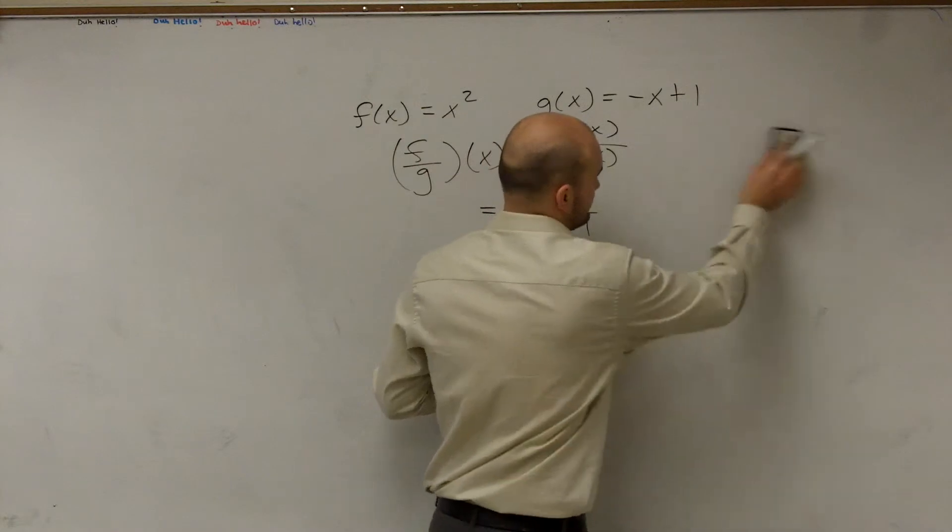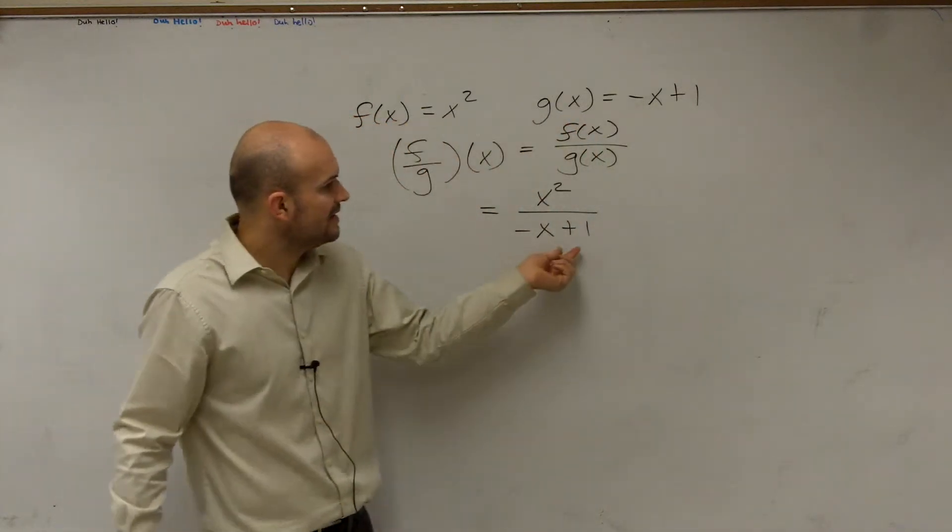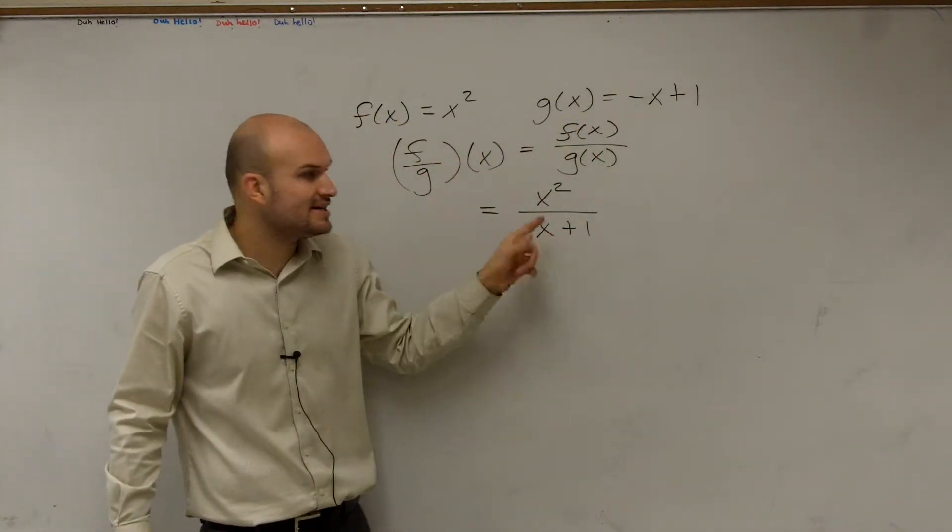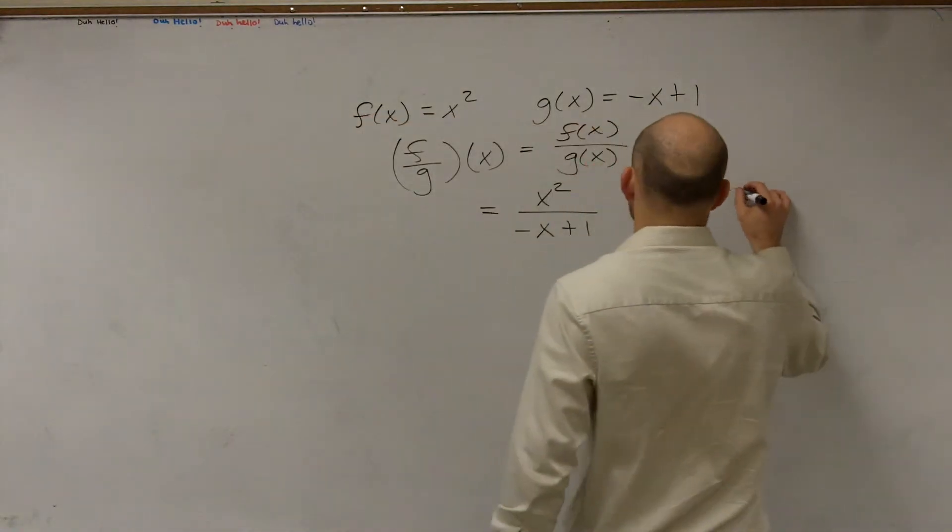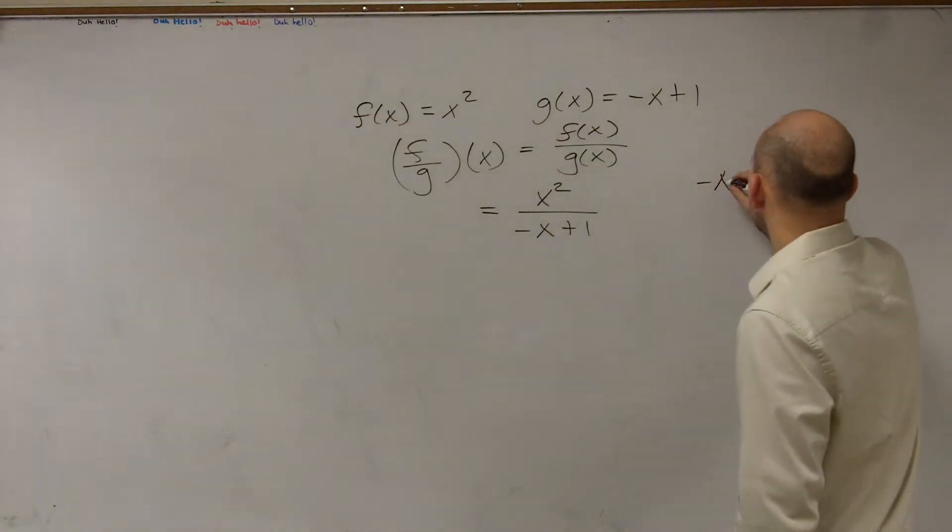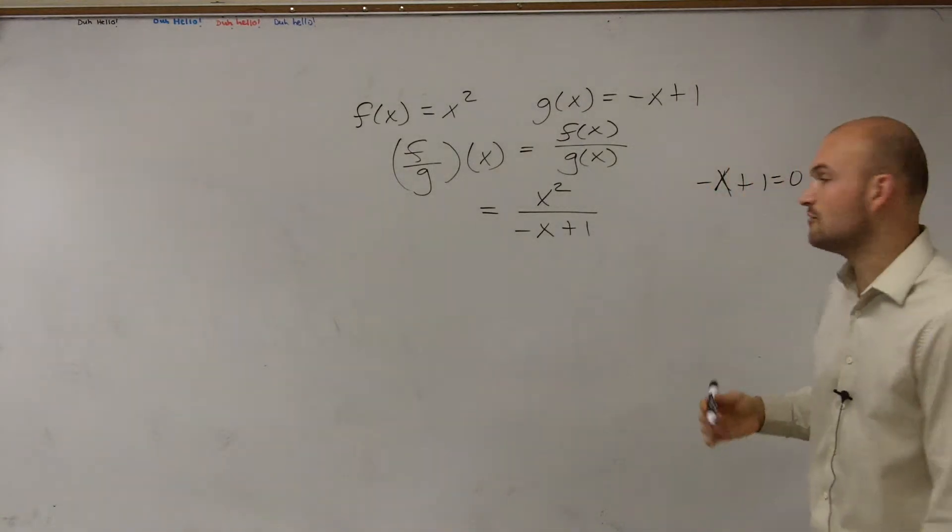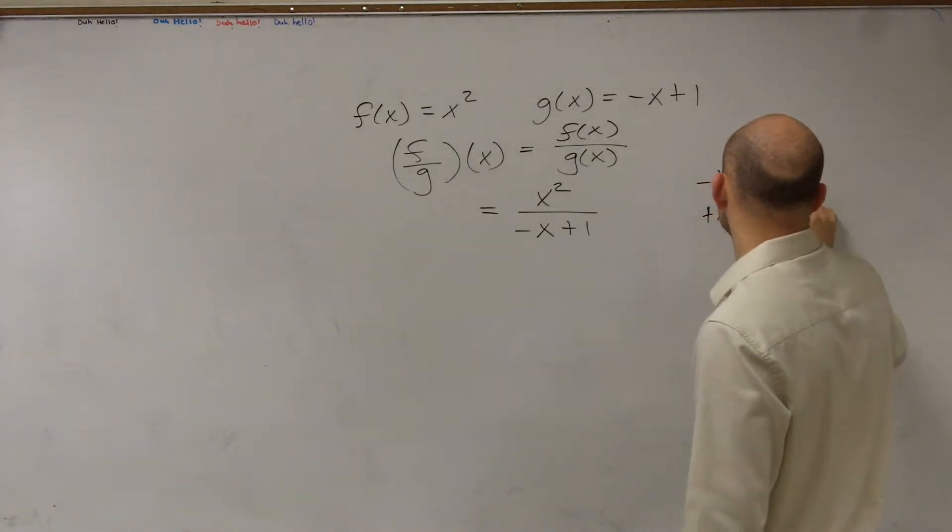So ladies and gentlemen, what we have here is I want to figure out what, then, is going to make this denominator zero. So I write negative x plus 1 equals zero. Then what I do is I solve for x. So I add x to the other side. And therefore, I say x equals 1.